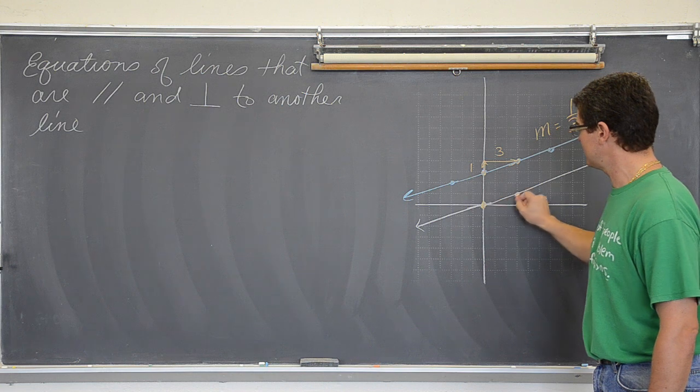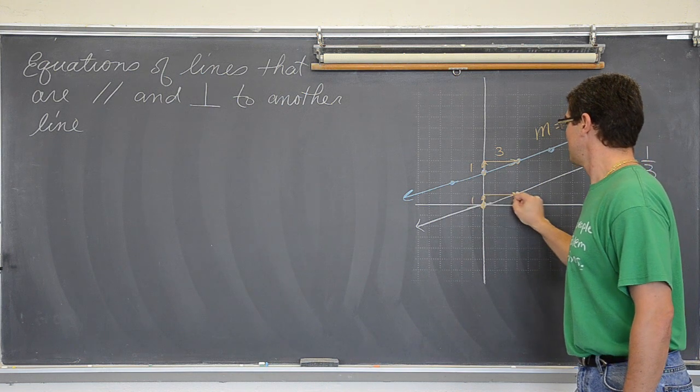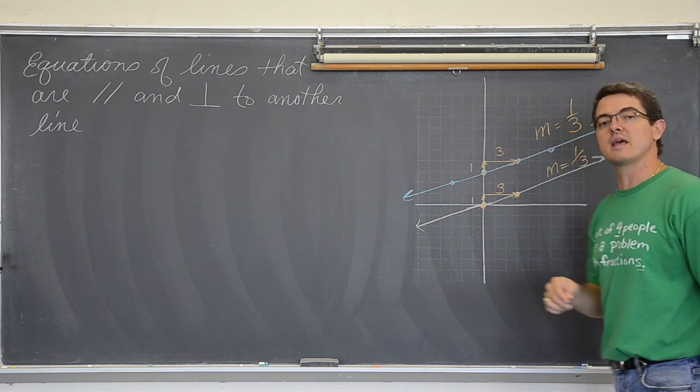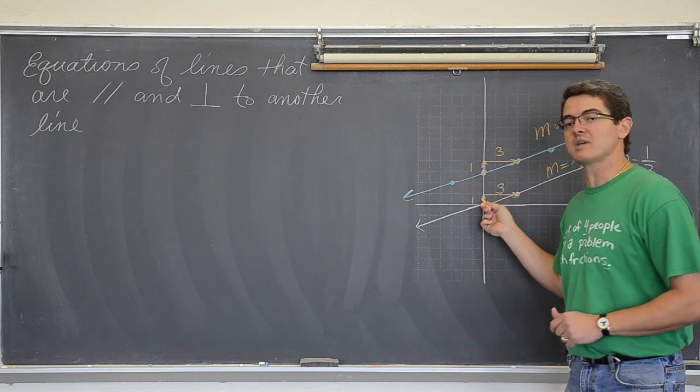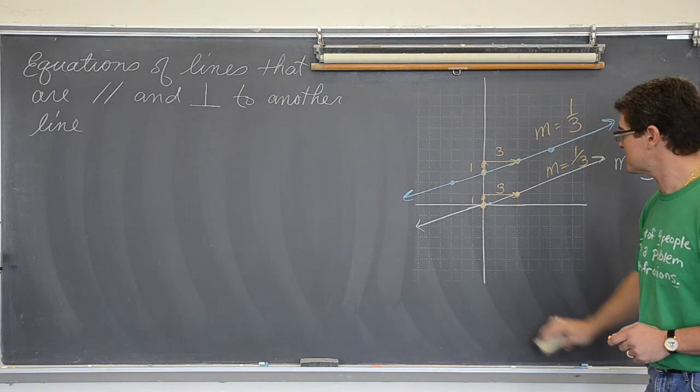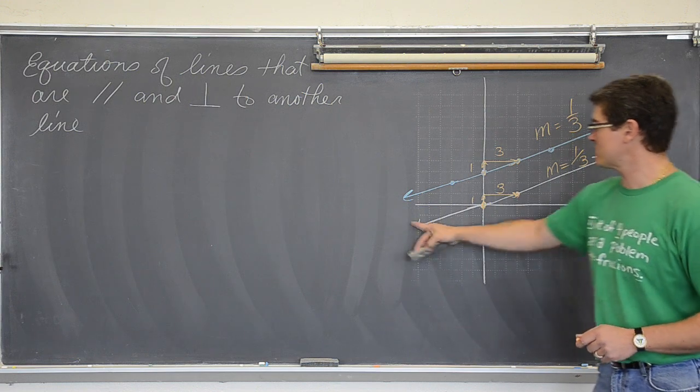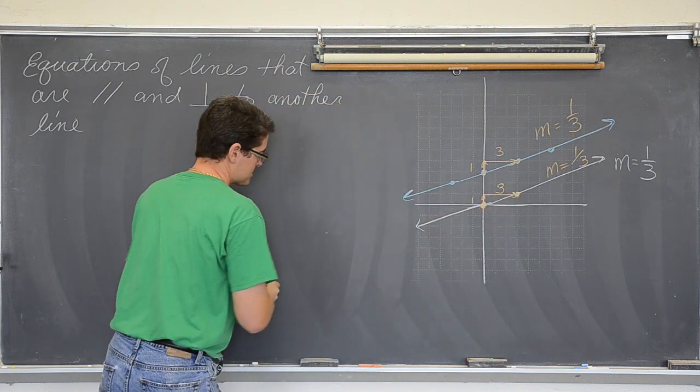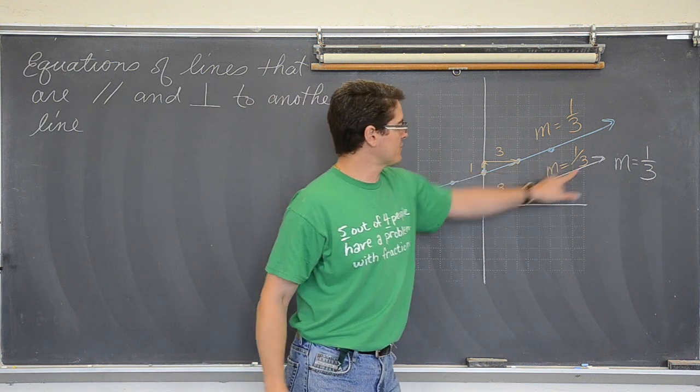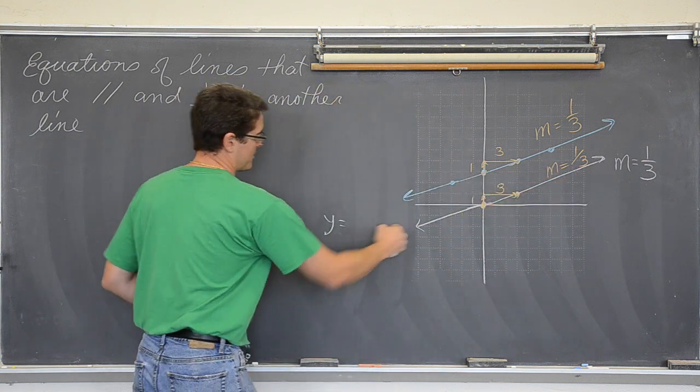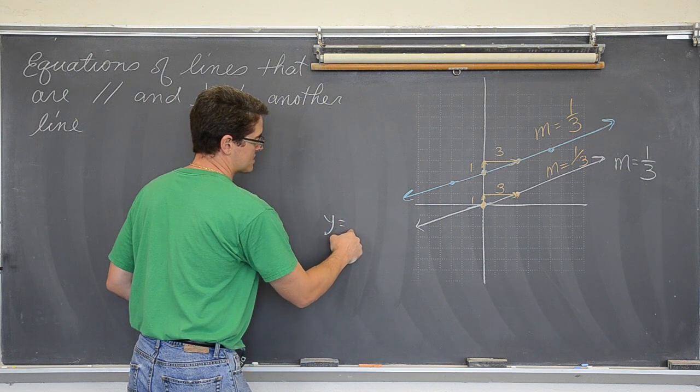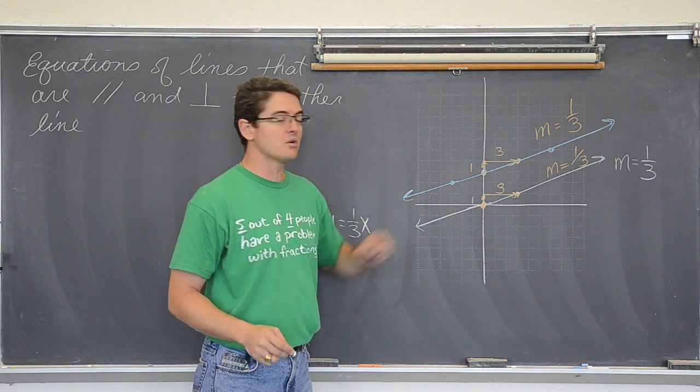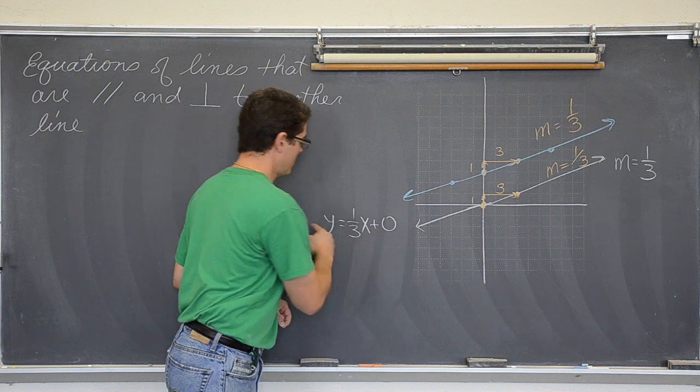This line to get from this point to this point you have to go up one and over three. So this blue line has a slope of one-third, just like the white line does. If I count that out to get from this point to this point it is up one and over three. So both of these lines are going through or have the exact same slope. Now they do have different y-intercepts.